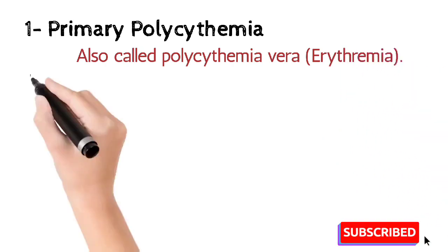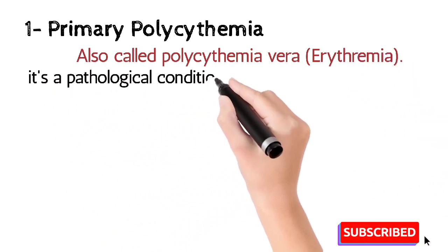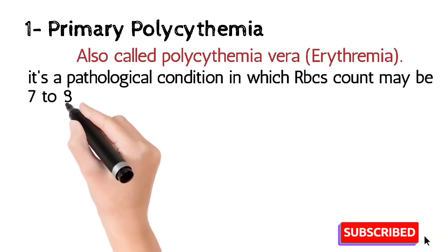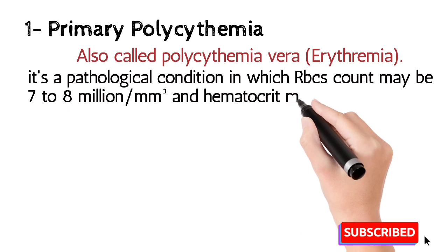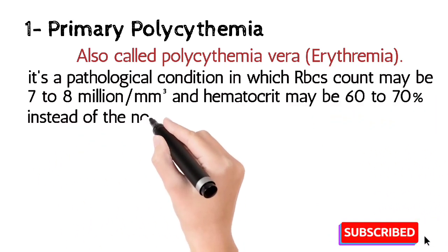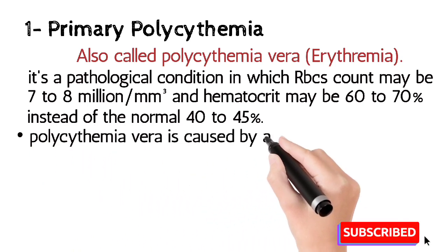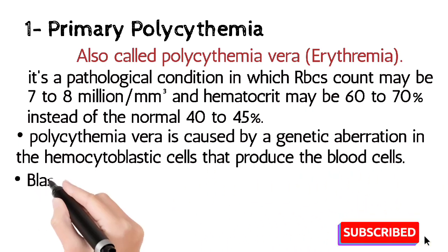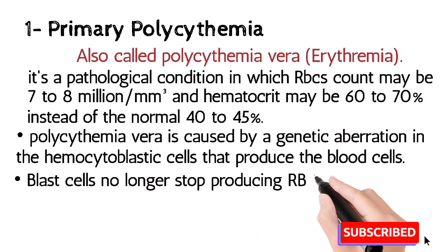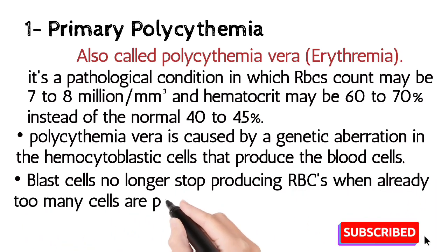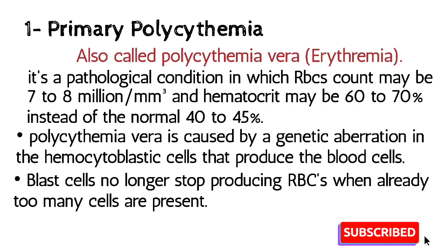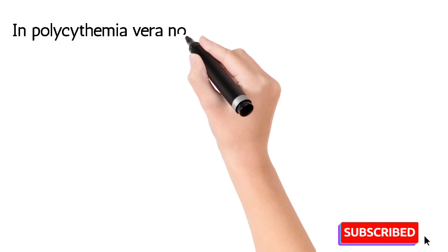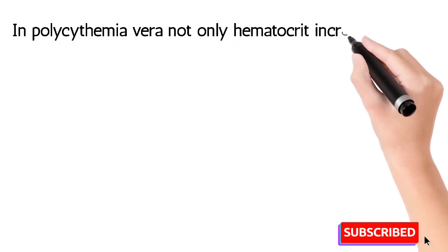Primary polycythemia is also called polycythemia vera or erythremia. It is a pathological condition — not the normal response of the body. In this condition, the RBC count may be seven to eight million per millimeter cube and hematocrit may be 60 to 70 percent, instead of the normal 40 to 45 percent. Polycythemia vera is caused by a genetic aberration in the hemocytoblastic cells that produce RBCs — these blast cells no longer stop producing RBCs even when too many are already present.